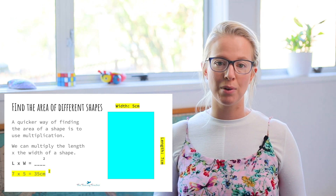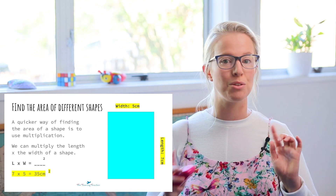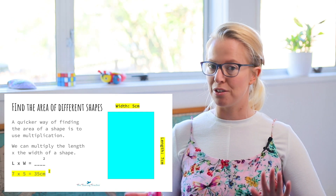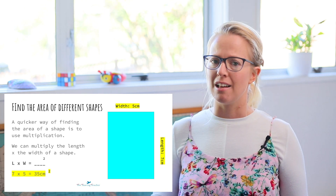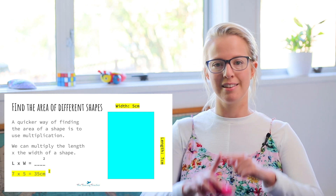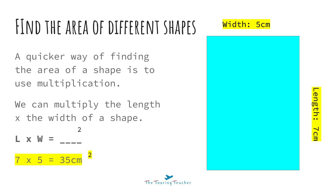So the first thing we need to know is which side of the rectangle is the length and which side is the width. I have written those on this rectangle for us, so it makes it a little bit easier. You'll be able to tell — the length is normally the longest and the width is shorter than the length. Hopefully that helps. So the length of this rectangle is seven centimetres, and the width is five centimetres.